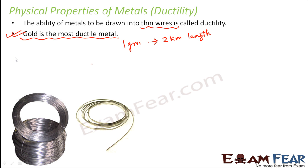Copper wires are used for wiring purposes in terms of carrying electricity. There are two advantages of using copper wires: one is that copper can be drawn into wires, and secondly, copper can conduct electricity. Aluminum wires are used for fencing or binding things — fencing a field or fencing the boundary — so for those purposes aluminum wires are very commonly used.